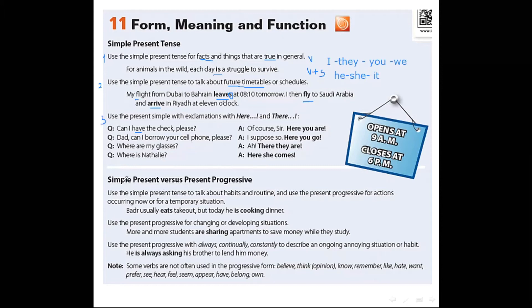What's the difference between simple present and present progressive? Simple present versus present progressive. Use the simple present tense to talk about habit and routine. We do something every day or every month. It's a habit. I get up early every day. It's my habit. And use the present progressive or continuous for actions occurring now or for temporary situations. It's not a habit. It's temporary. Like Padra usually eats take out. Padra today he is cooking dinner.